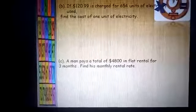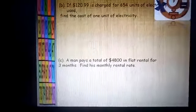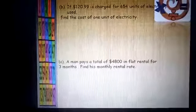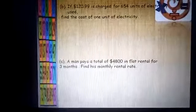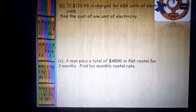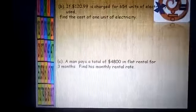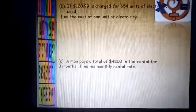Now part B. If $120.99 is charged for 654 units of electricity used, find the cost of 1 unit of the electricity.